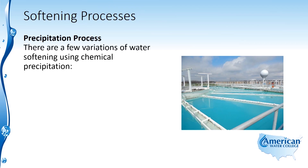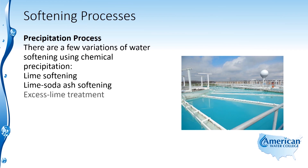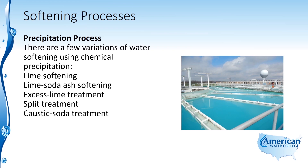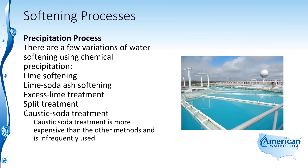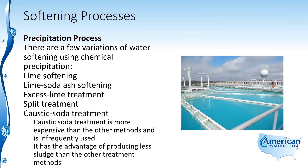There are a few variations of water softening using the chemical precipitation process: lime softening, lime soda ash softening, excess lime treatment (used to remove larger quantities of magnesium), split treatment, and caustic soda treatment. Caustic soda treatment is more expensive and infrequently used, so it won't be discussed further. However, it does have the advantage of producing less sludge than the other treatment methods.